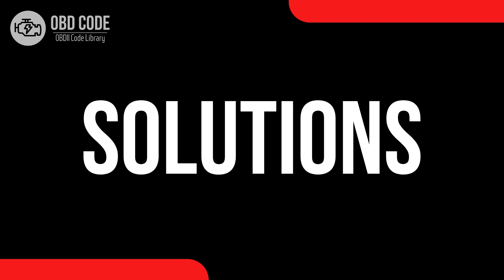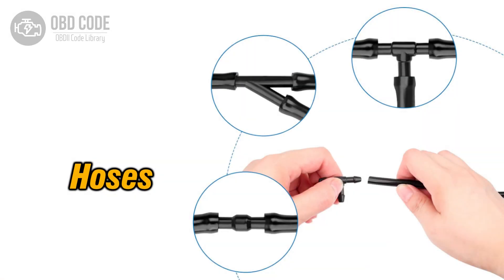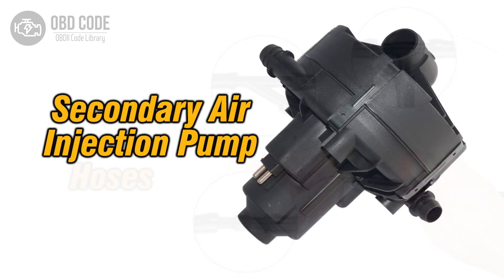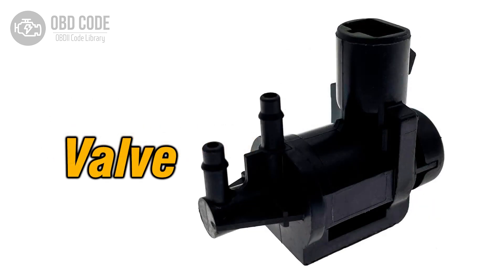Code Solutions P0492: 1. Inspect the secondary air passages for any blockages or restrictions. Clean or replace components as necessary. 2. Test the secondary air pump for proper operation. Replace the pump if it is defective. 3. Check the air system valves for proper functioning. Replace any faulty valves.